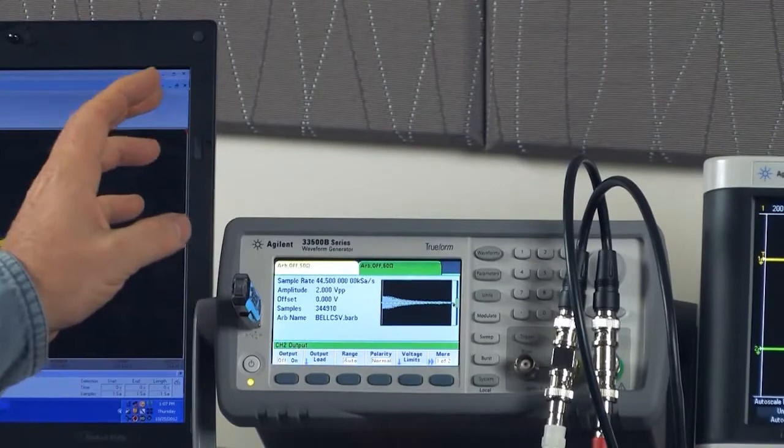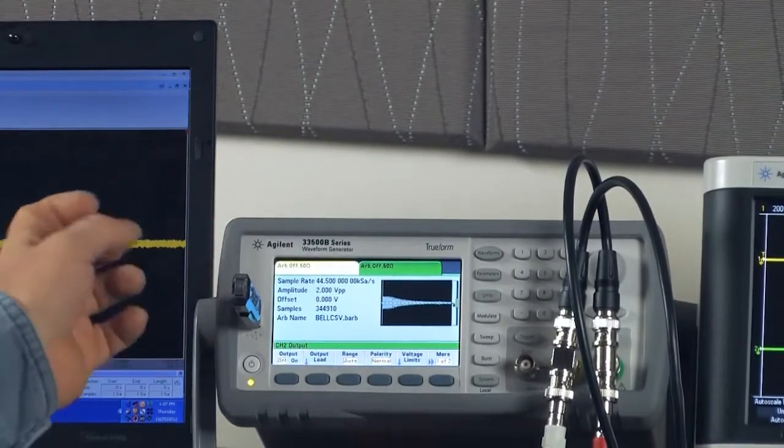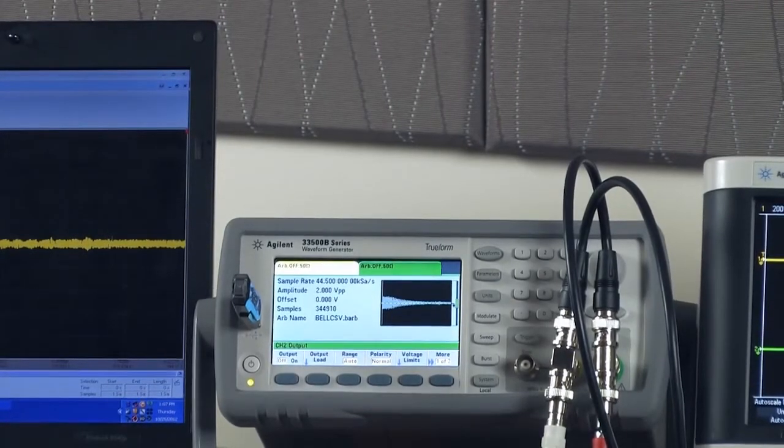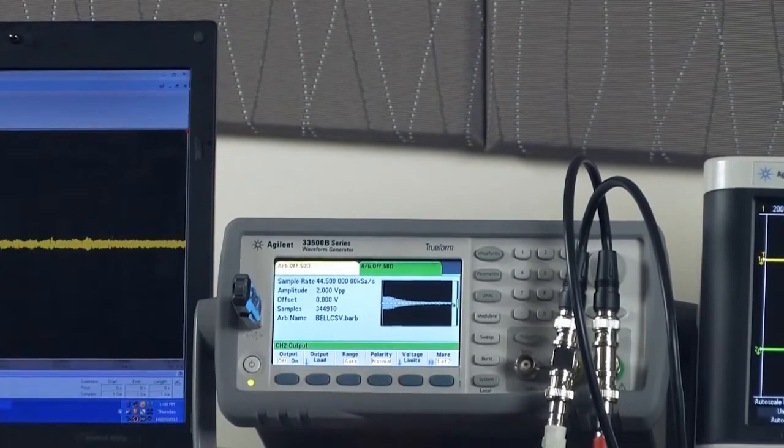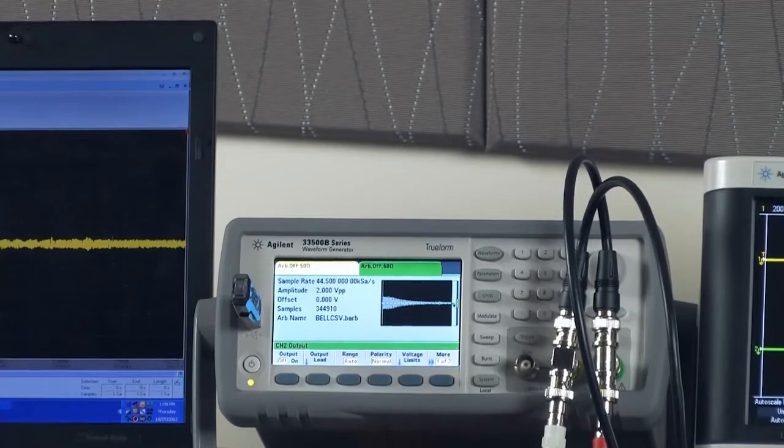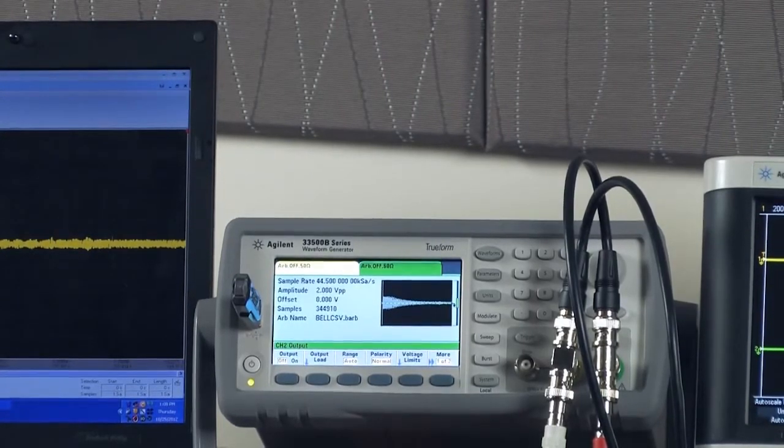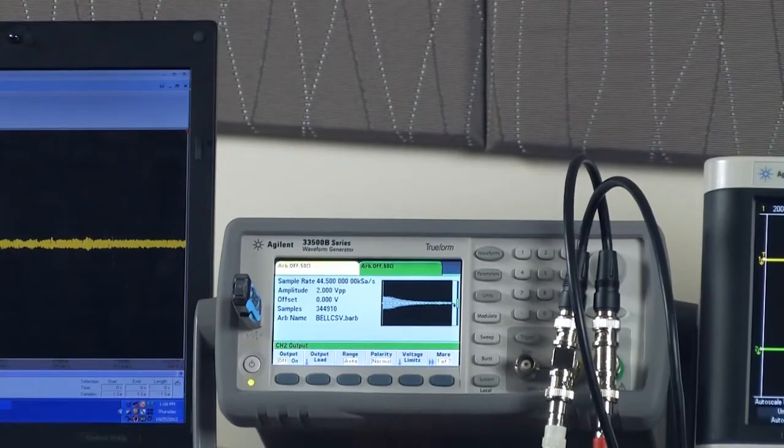These new function generators have a feature called true form, and true form means that every single point on this chart will be identically played. So what I'm going to show you today is how to download an ARB, and this bell is just a representation of any type of ARB that you could want to load into your box. Then I'll load this ARB onto channel one of the box, and then I'll load the same ARB onto channel two.